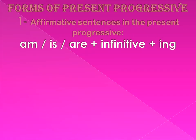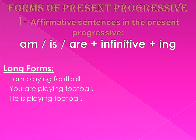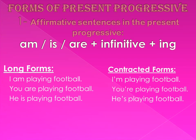Now let's talk about the forms of the present progressive. The first one is the affirmative sentence. In the present progressive we put the verb 'to be,' which is am, is, or are, plus the infinitive plus -ing. Examples of long forms: I am playing football, you are playing football, he is playing football. Examples of contracted forms: I'm playing football, you're playing football, he's playing football.